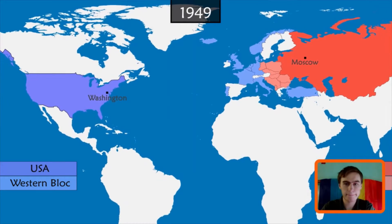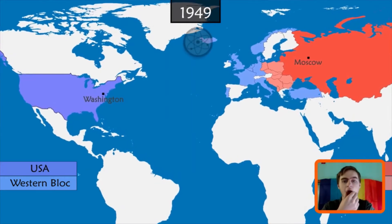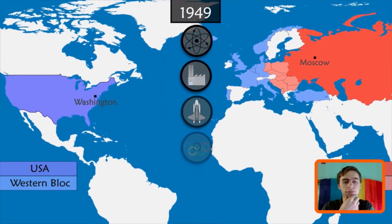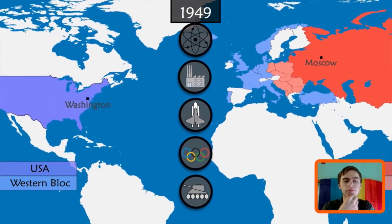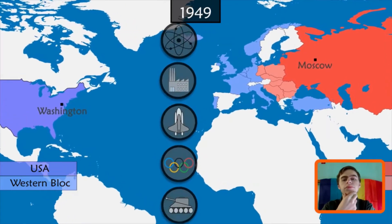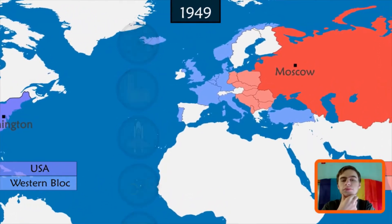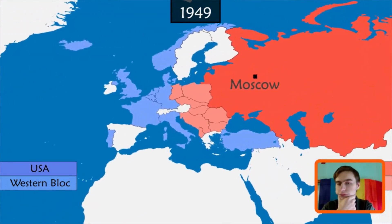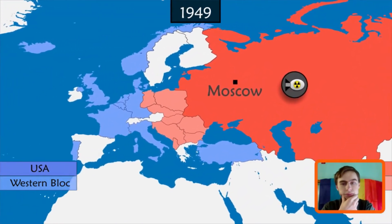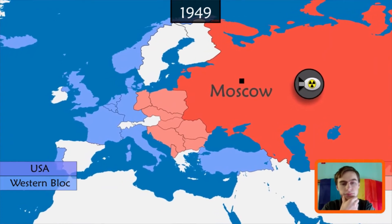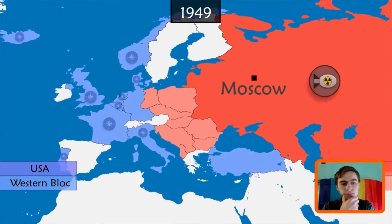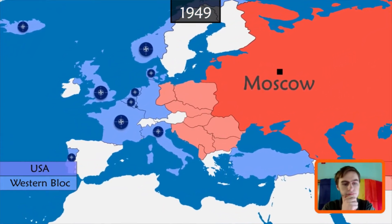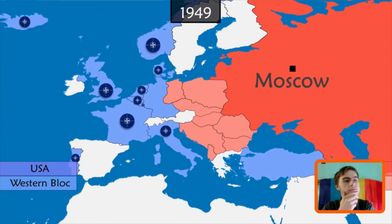Beyond ideology and clout, the two powers battle for influence in the fields of science, industry, space, sports, and military. The Soviet Union invests heavily in industry and arms, and in 1949 tests its first atomic bomb. That same year, the United States sets up NATO — a military alliance between countries of the western bloc.